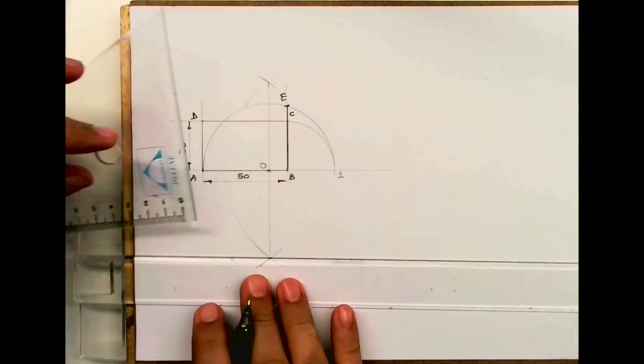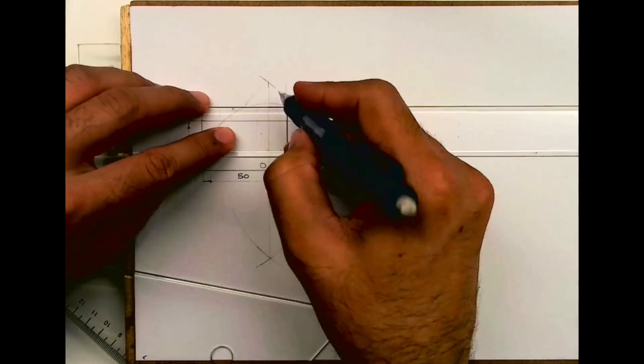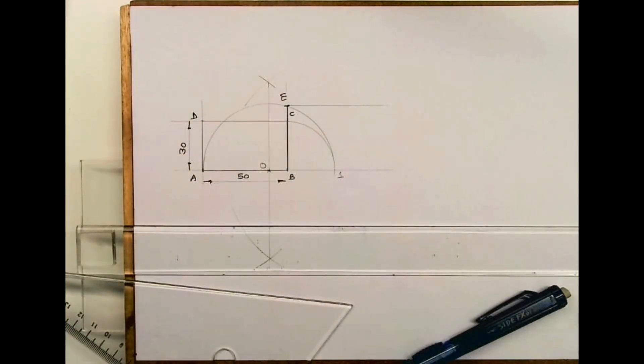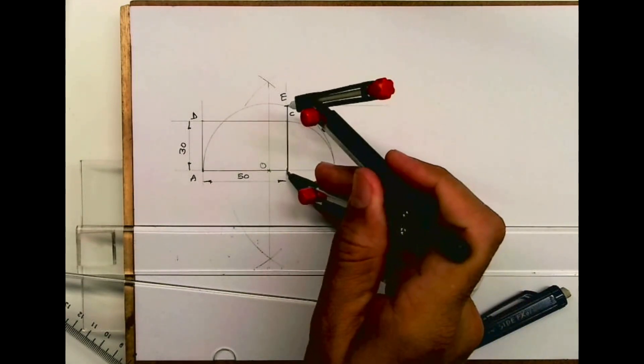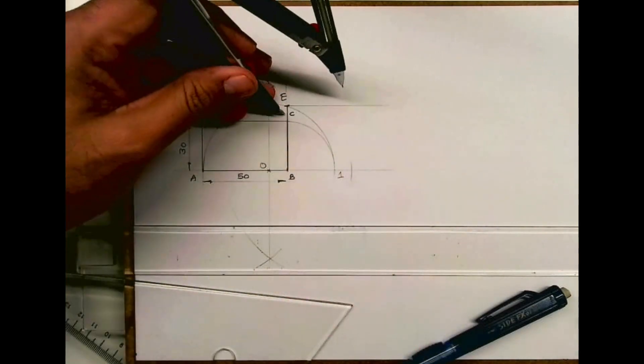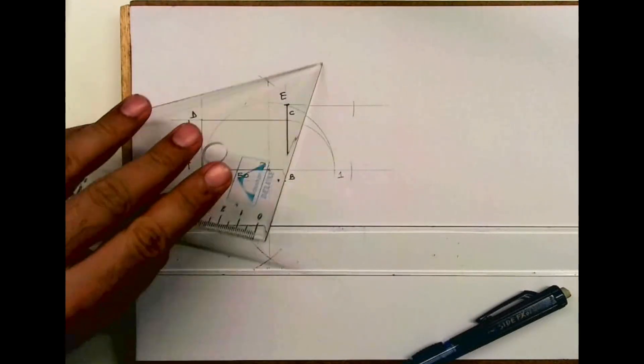Now what I need to do is mark length BE on the horizontal and vertical lines like this. We'll take distance BE and cut our horizontal line like this, so we can automatically get the square.